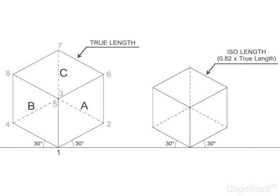Hence, the view drawn using true length is called the isometric view. On the other hand, the view drawn using isometric scale is known as isometric projection.